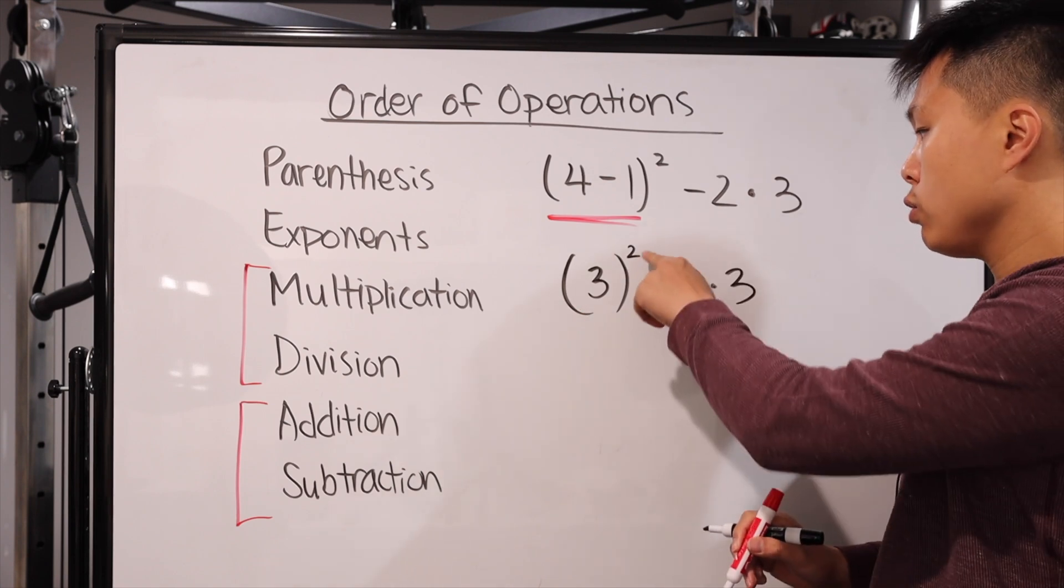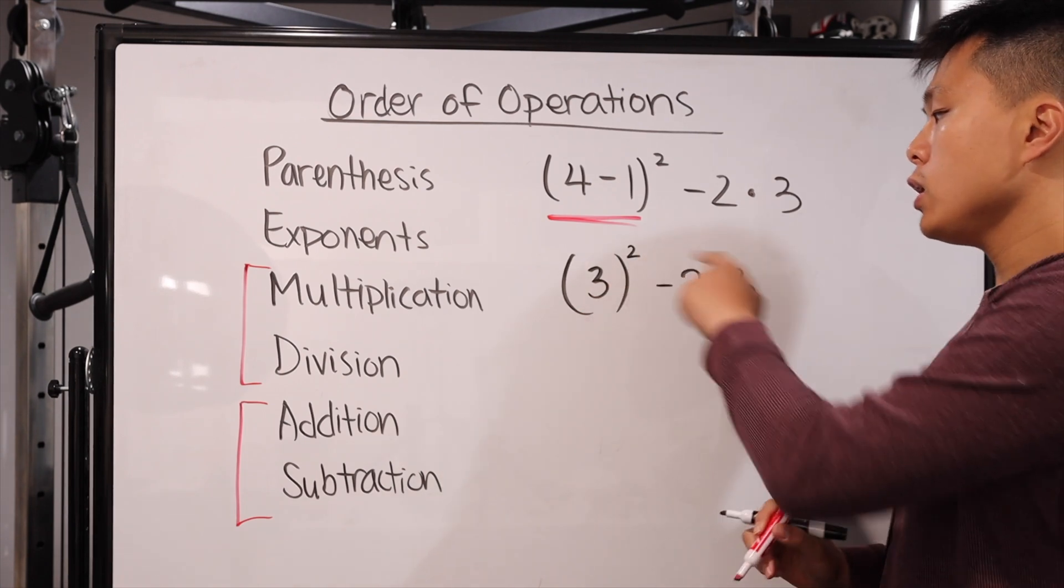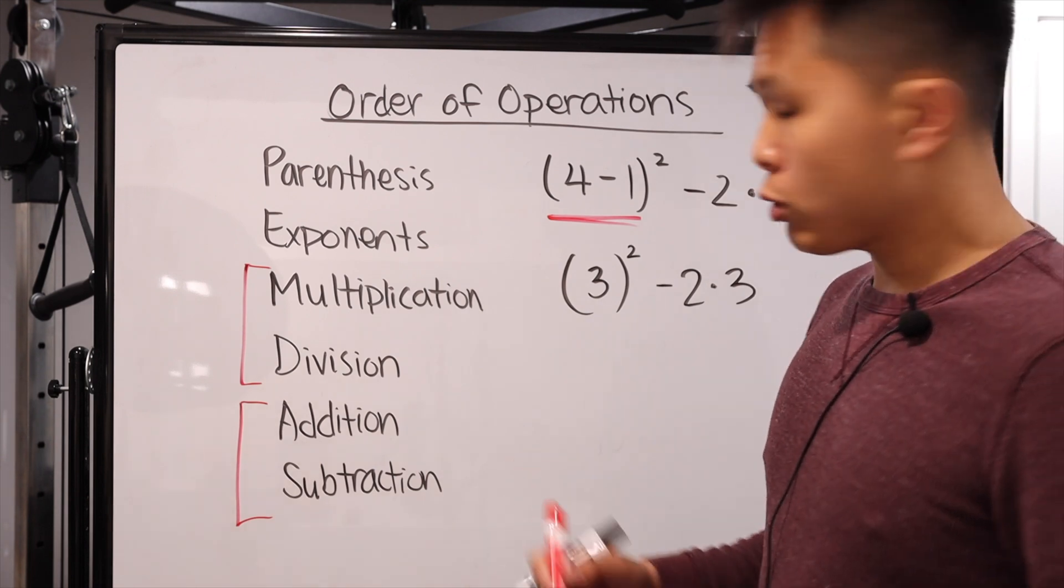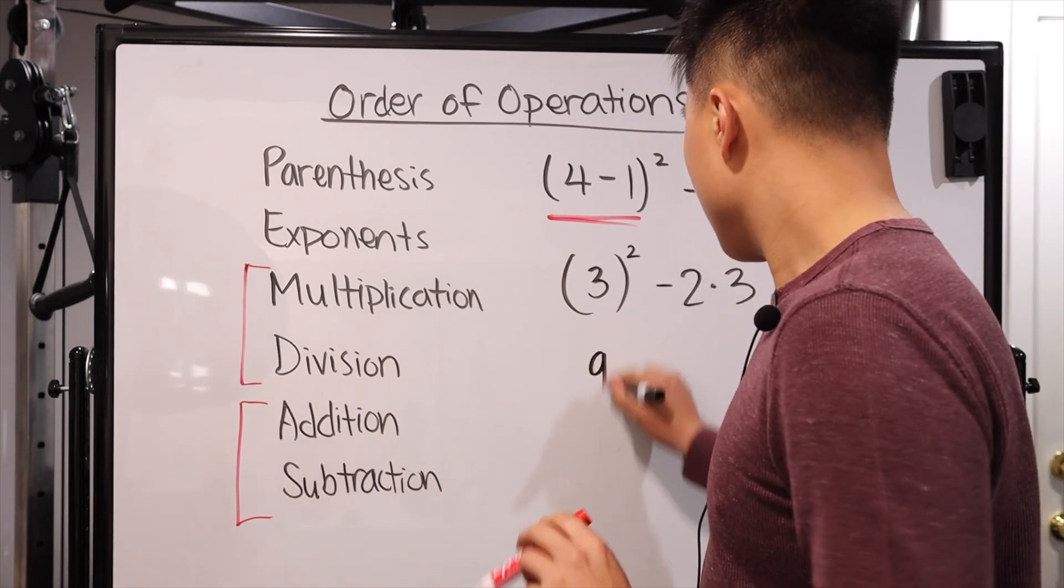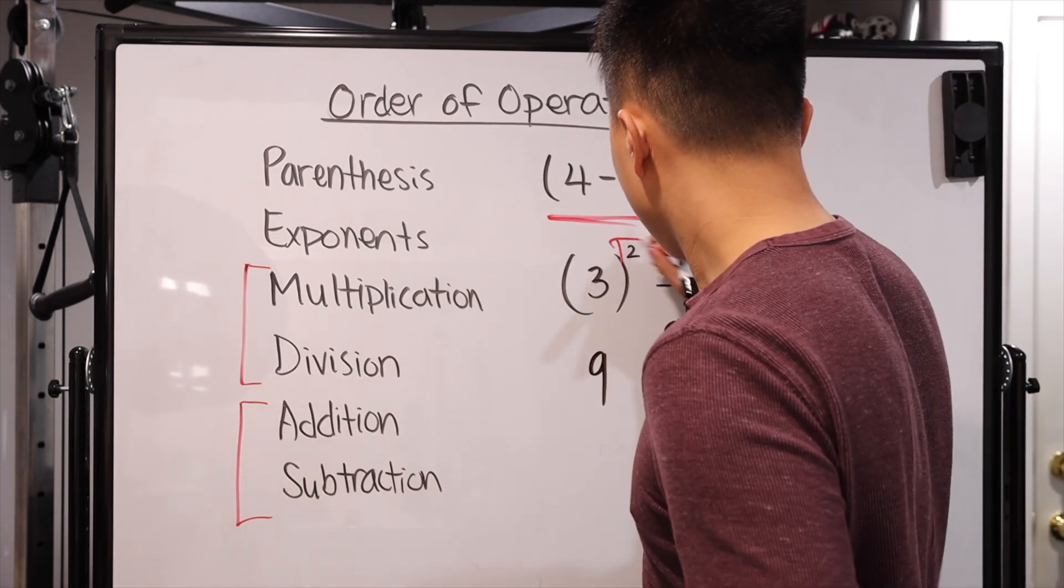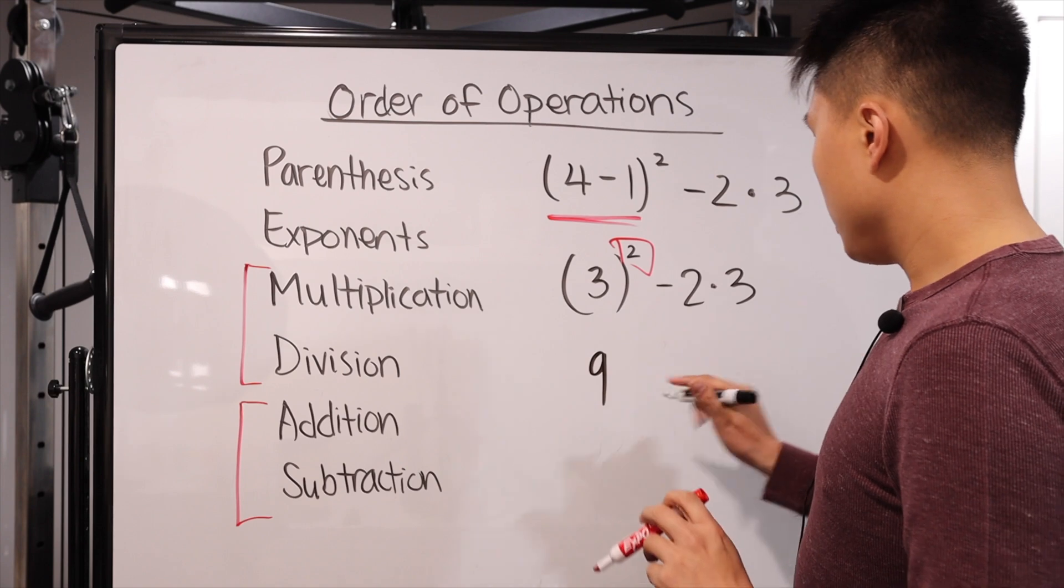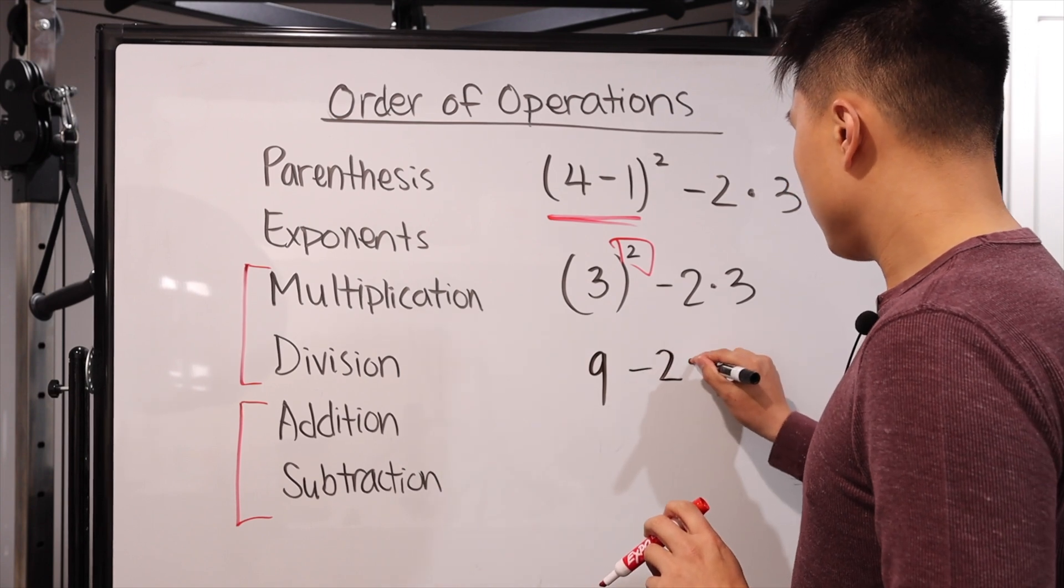The next one is exponents. Yes, there is an exponent in this one. So it was right there. So that means 3 squared, which is 3 times 3. That means we have 9. So there's our exponent. Let's just make sure I highlight that.